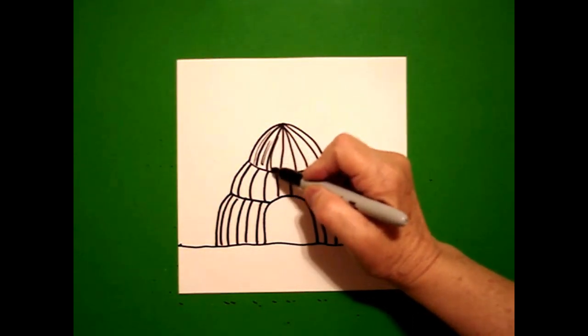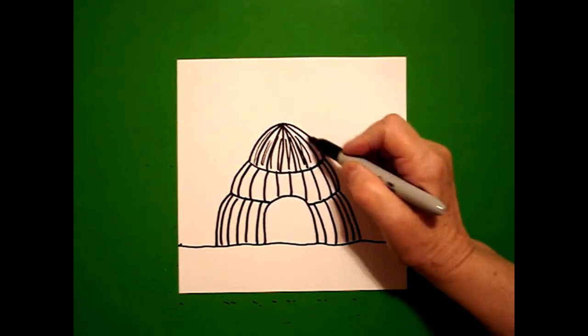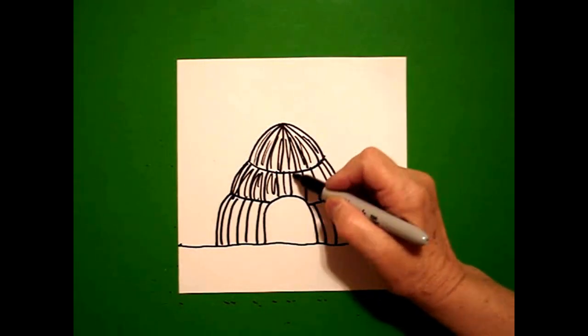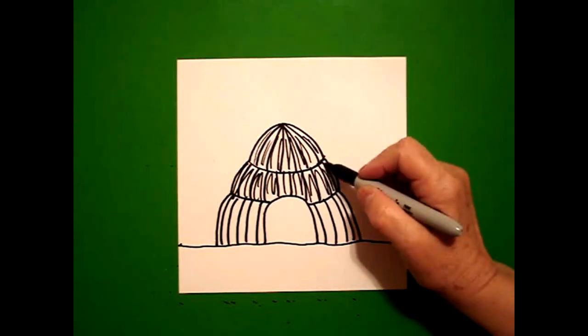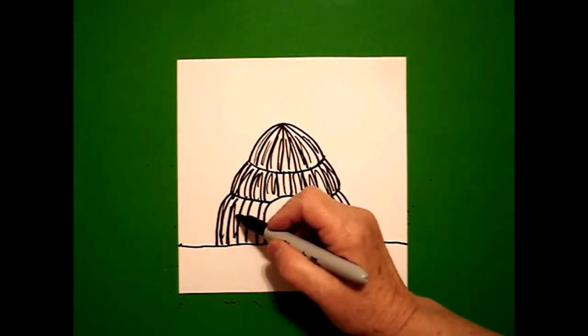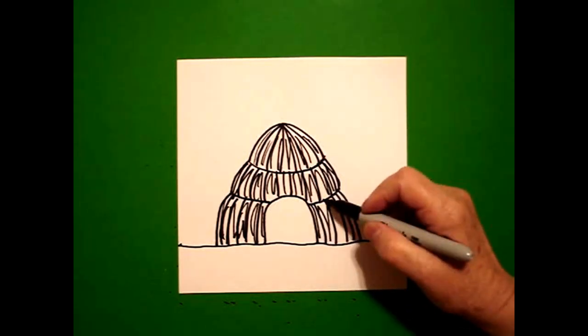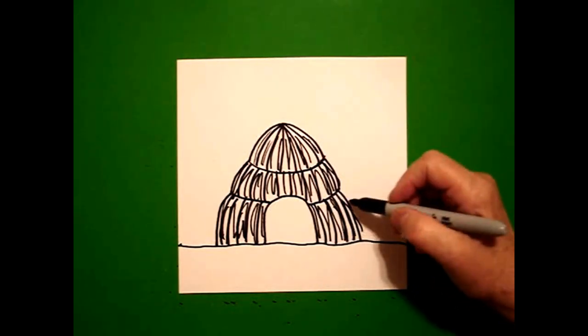So keep going and stop. Now what you can do if you want is come back in and just do some up down up downs. They don't have to be even, they don't have to be straight. You're just adding a little bit of texture inside your spaces.